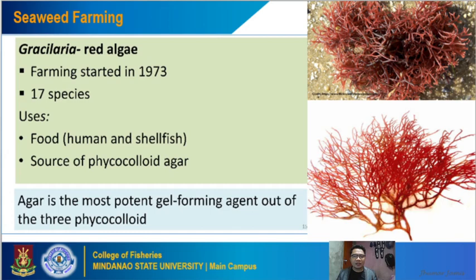We also have Gracilaria being cultivated in the Philippines, starting in 1973 with about 17 known species. Its uses include food for humans or shellfish, particularly abalone — it is one of the primary foods for abalone. It is also a source of the phycocolloid agar, which is the most potent gel-forming agent among the three phycocolloids that can be extracted from seaweeds.